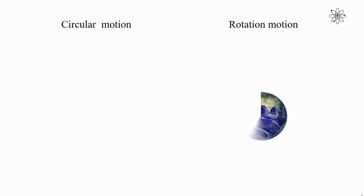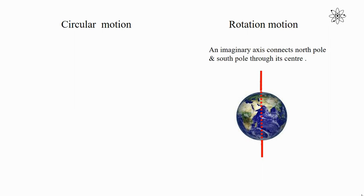In the spinning motion of the earth, the earth rotates about an imaginary axis which connects the north pole and south pole through its center. This imaginary axis is known as the axis of rotation. So in the rotational motion of the earth, the axis of rotation is part of the earth. In other words, the axis of rotation lies inside the body, that is, the earth.